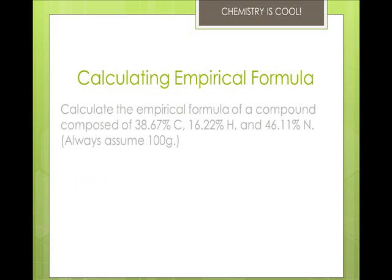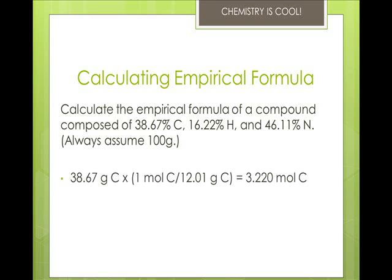So let's take a look at this one. We're going to calculate the empirical formula of a compound composed of 38.67% carbon, 16.22% hydrogen, and 46.11% nitrogen. You always assume that it's 100 grams unless you're told otherwise. So first we take that percentage of carbon and turn that into grams. So 38.67% is the same as 38.67 grams when you're assuming 100 grams. Then we multiply it by the moles of carbon and the molecular weight. So we get 3.220 moles of carbon.